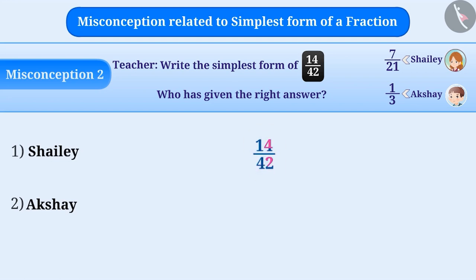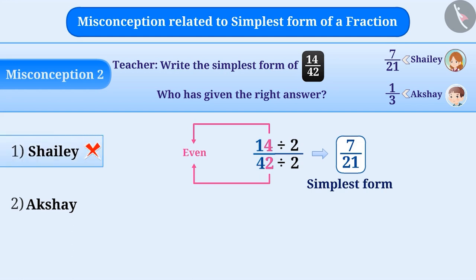The last digit of 14 and 42 is even, so the numerator and the denominator can be divided by 2. The obtained result 7/21 is considered as the simplest form of 14/42. Mistakenly, it is considered that the fraction cannot be simplified further. Therefore, Shaili has given the wrong answer.